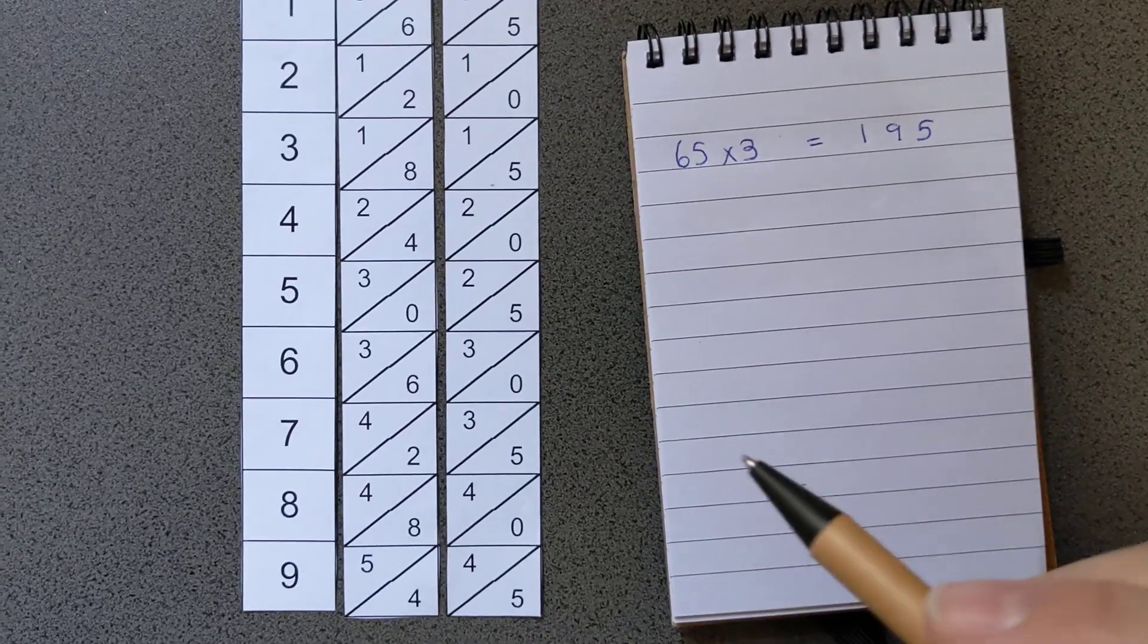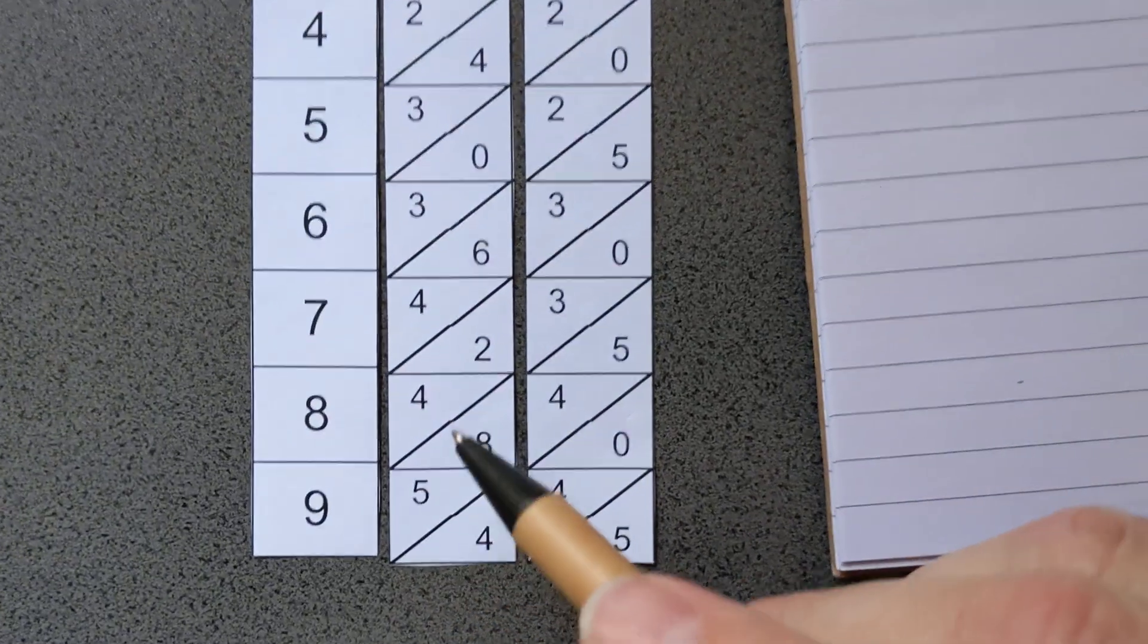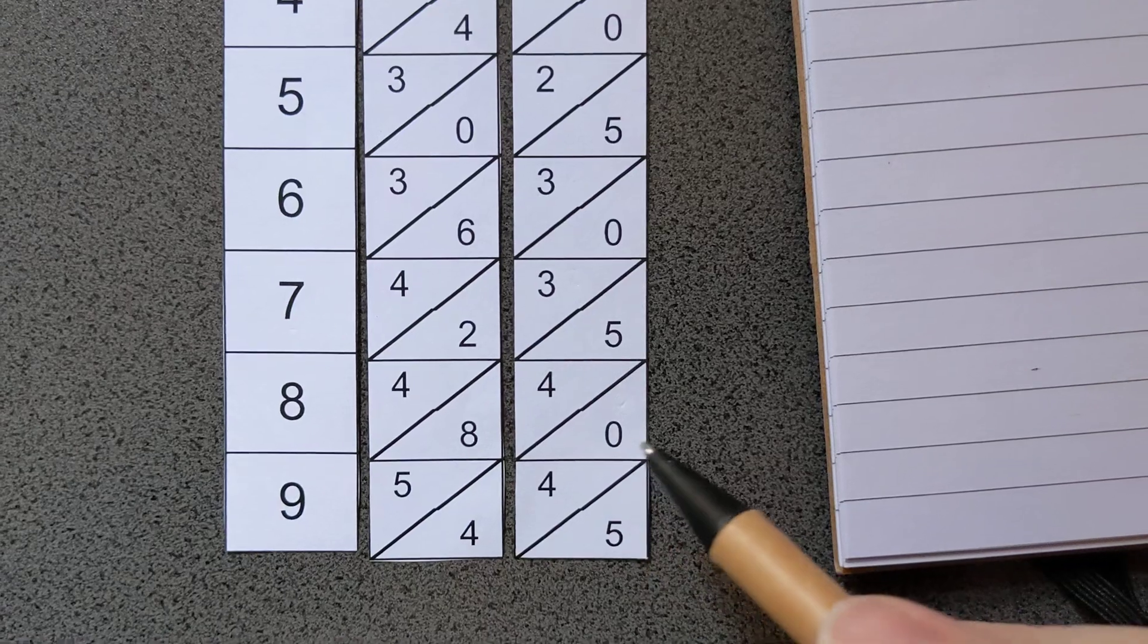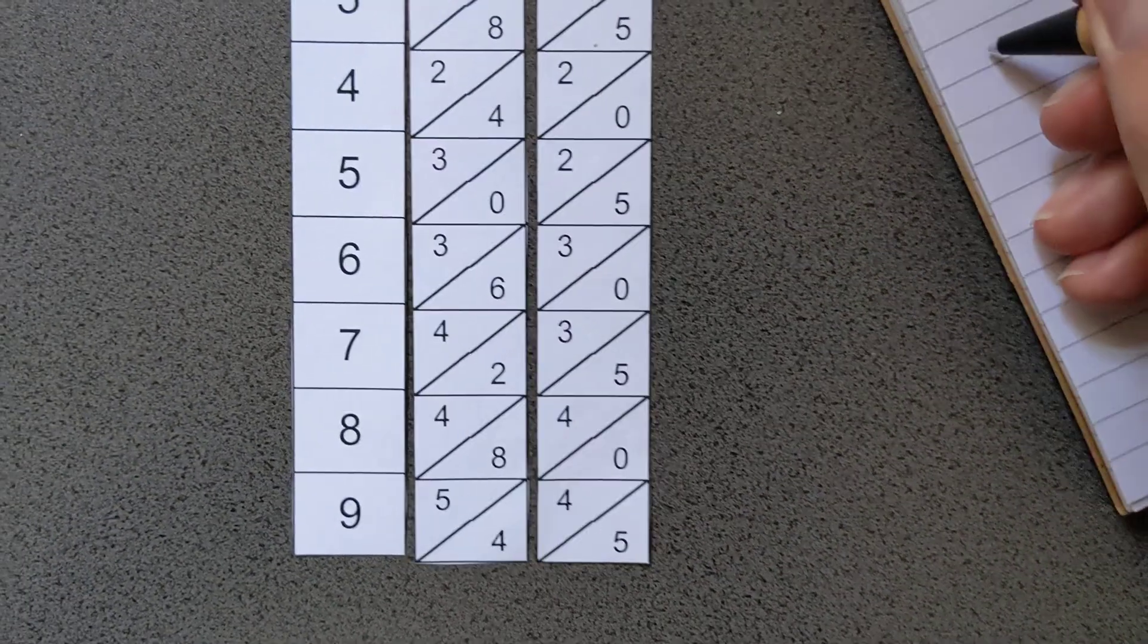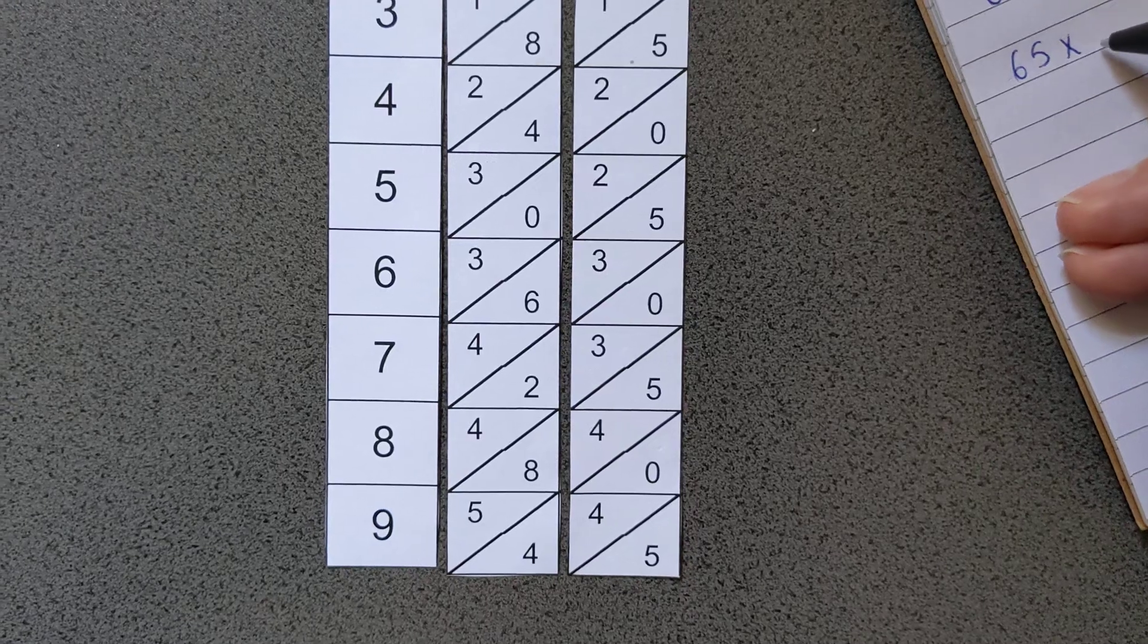What about if we're multiplying by a bigger number? So if we look at the bottom, if you wanted to do 65 times 8, so again, starting from the right, so 65 times 8.